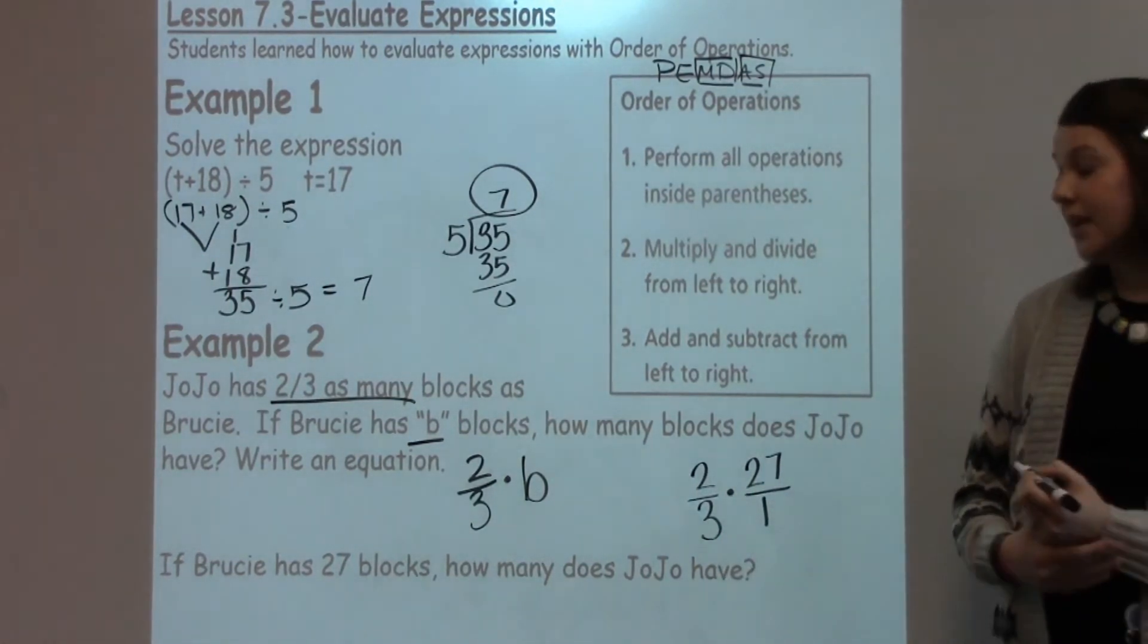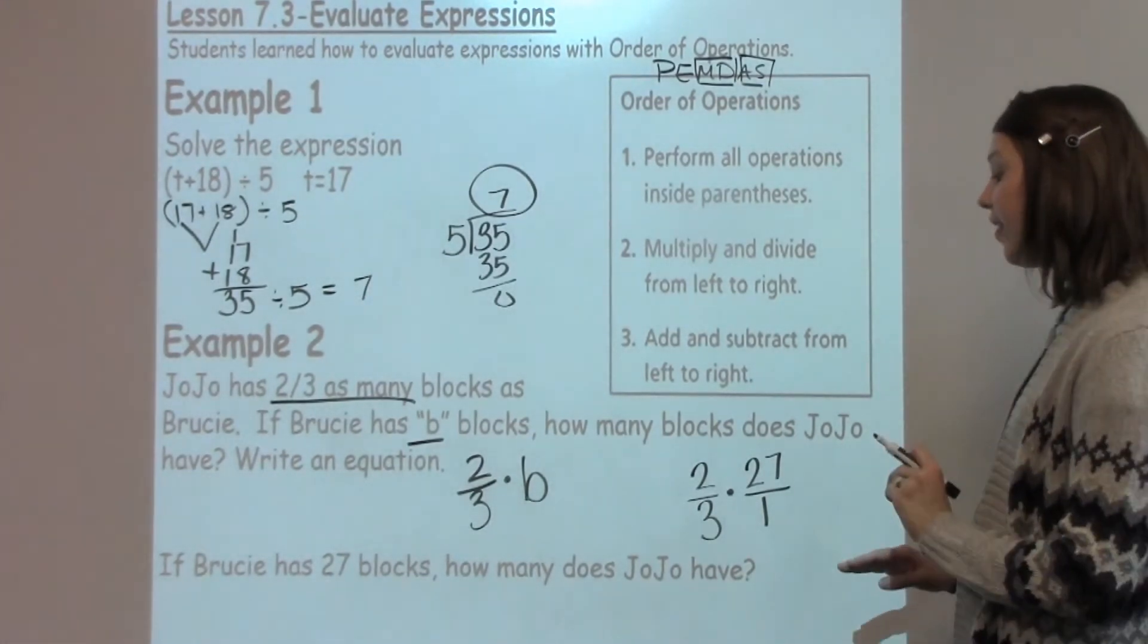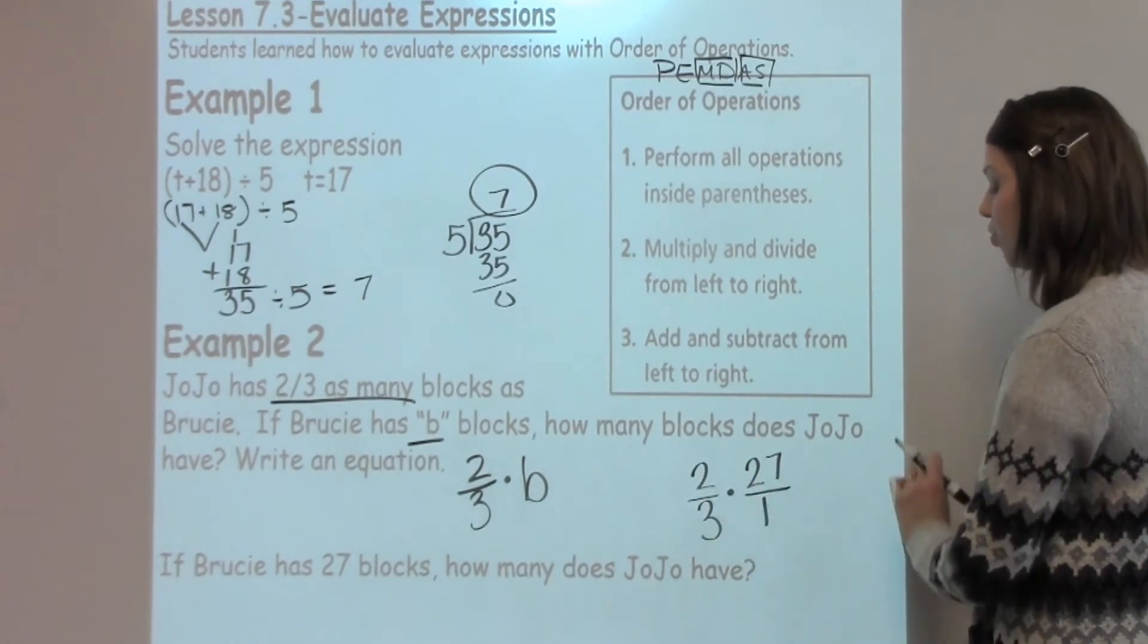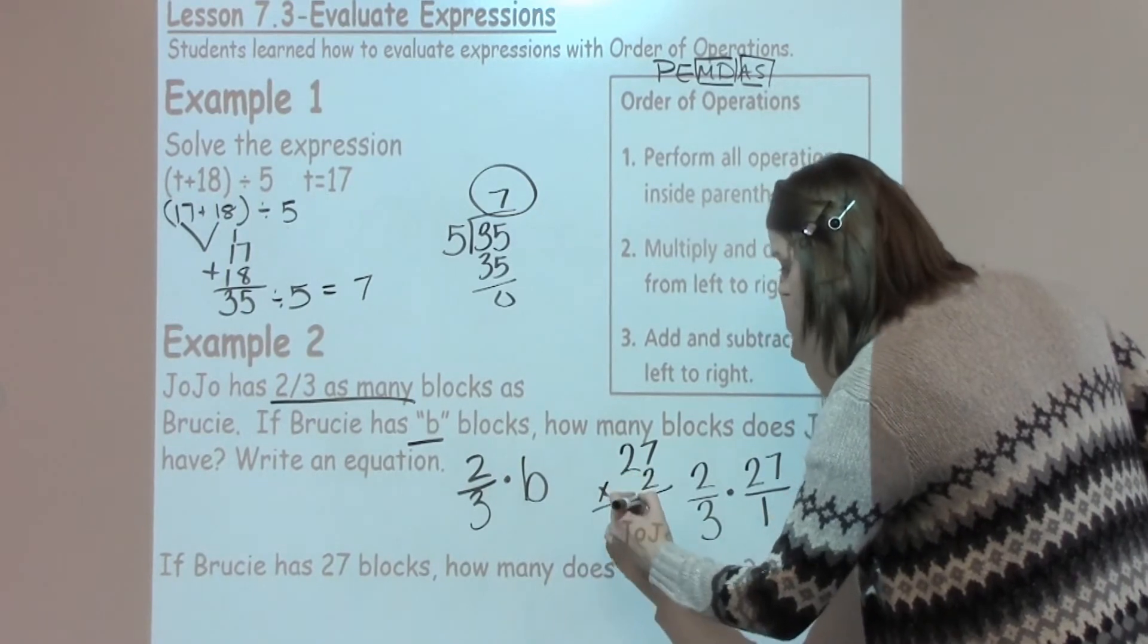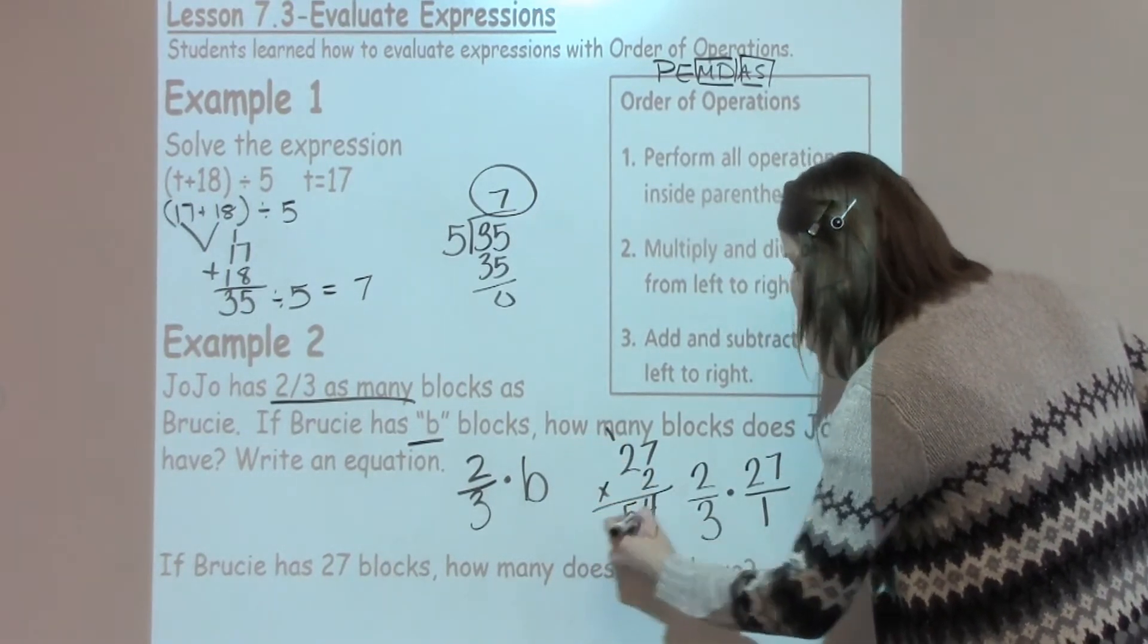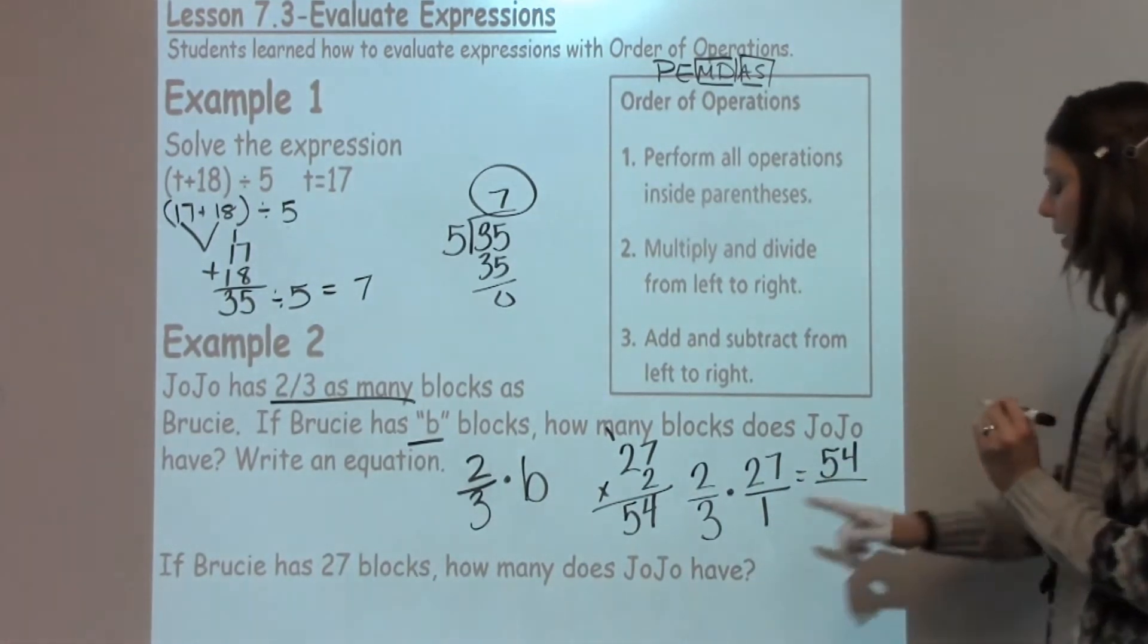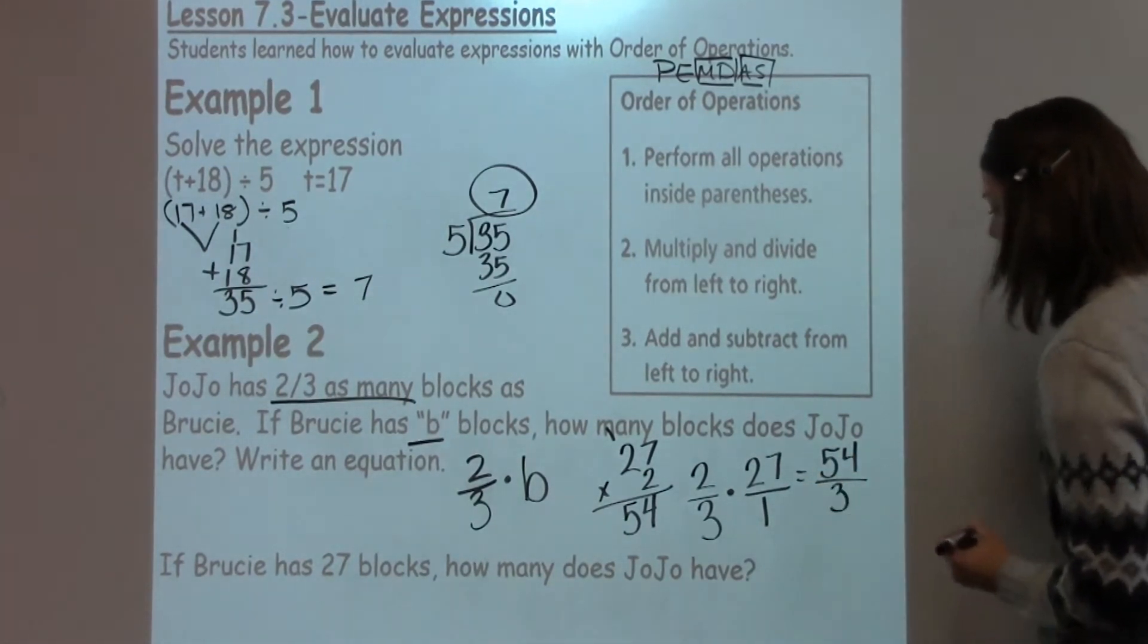Now some students may see that you can go ahead and cross-reduce here with 3s. That's great if they do. If they don't, they can just go ahead and multiply straight across. 2 times 27. I'm going to go ahead and write that down. 27 times 2, which is going to give me 54. So I've got 54 on the top of my fraction in my numerator. And then 3 times 1 is 3 in my denominator.